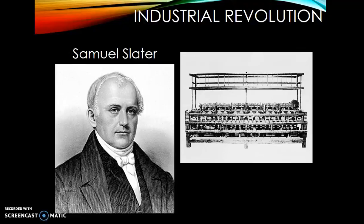Textile mills start popping up all over Great Britain, and Great Britain is making a lot of money. They want to keep this new technology top secret — it's actually illegal for Samuel Slater to sell the plans for the textile mill to any other country. But Slater refuses, saying he created it to revolutionize the world, not just Great Britain. So he breaks the law and brings these new machines to the United States and starts selling them.